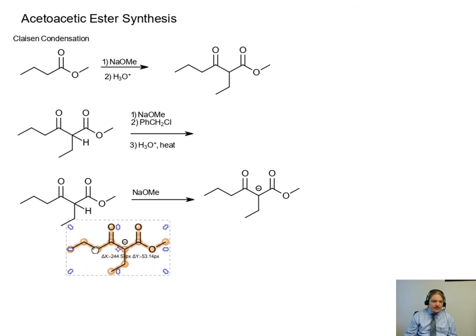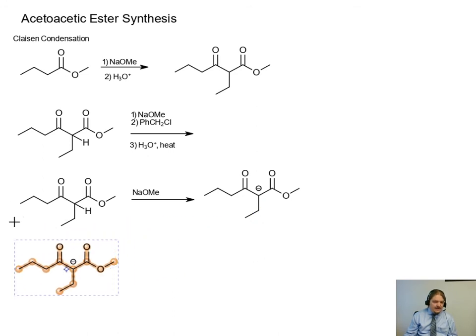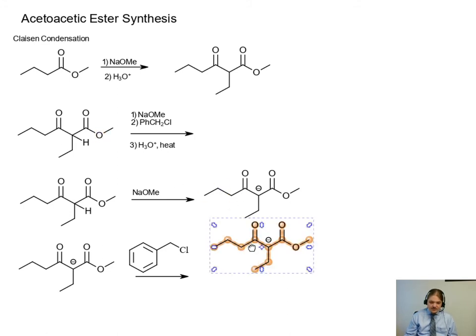In our next step, we're going to have our SN2 alkylation. Just once, I'm going to draw out the full structure of my alkyl halide electrophile. But I'm going to end up abbreviating it, because when I have to redraw the structure here, that phenyl group is just not going to fit. It's not going to look pretty here.